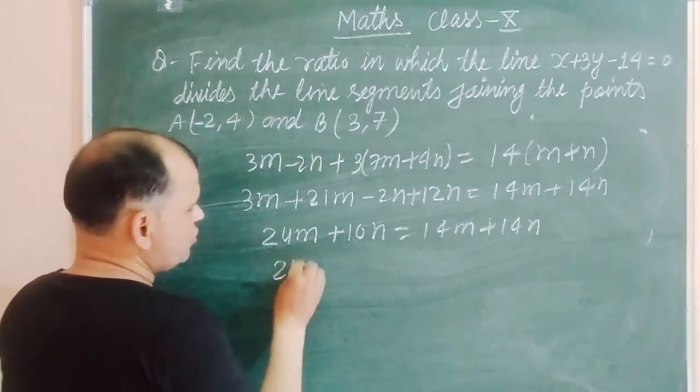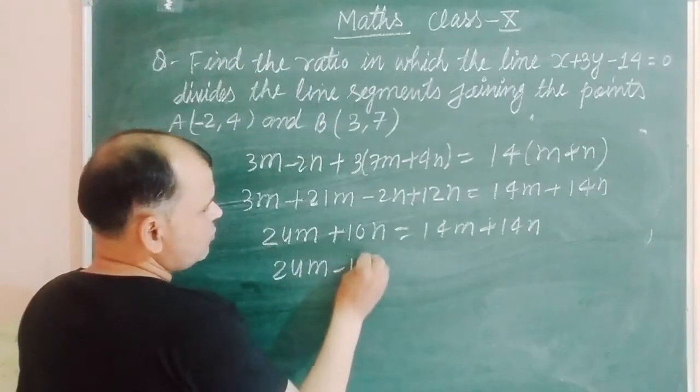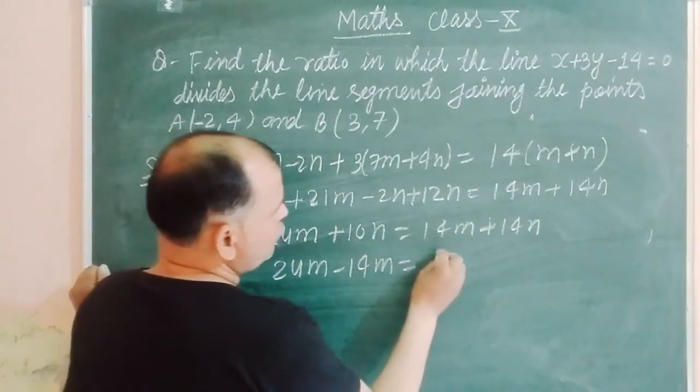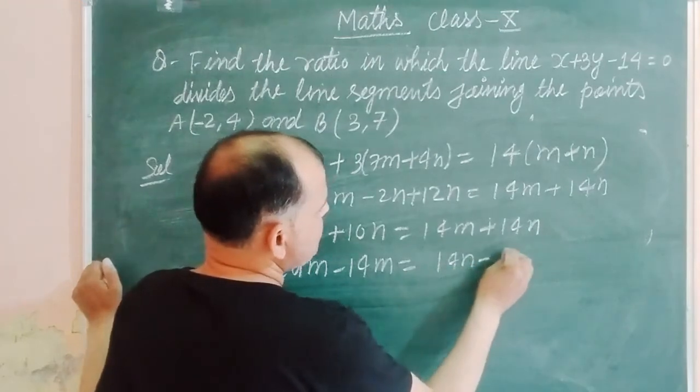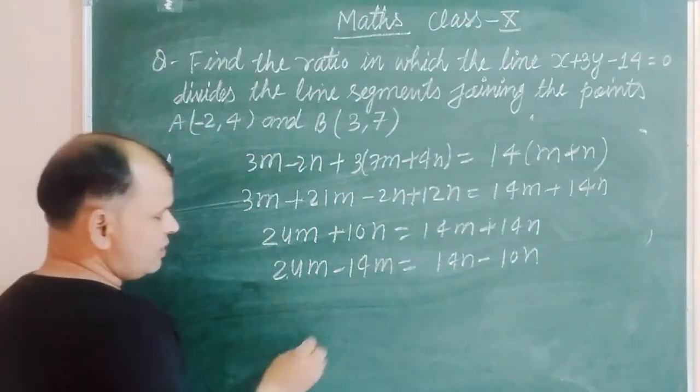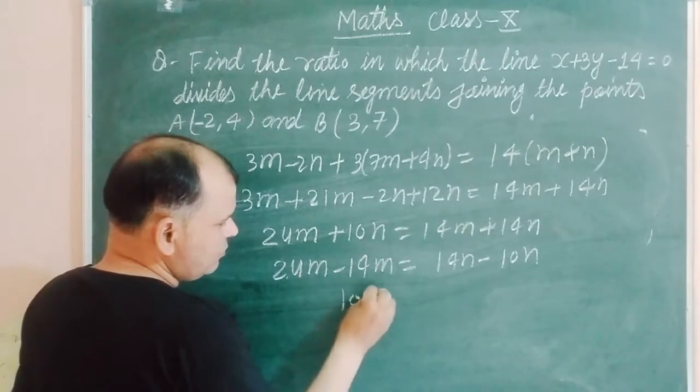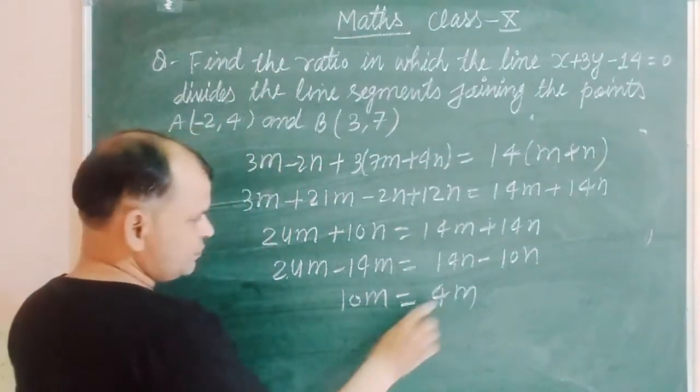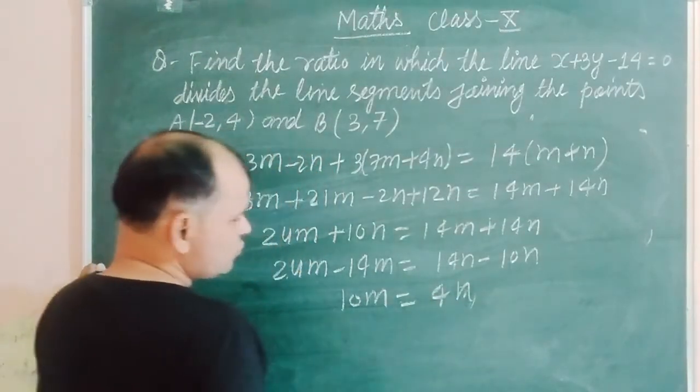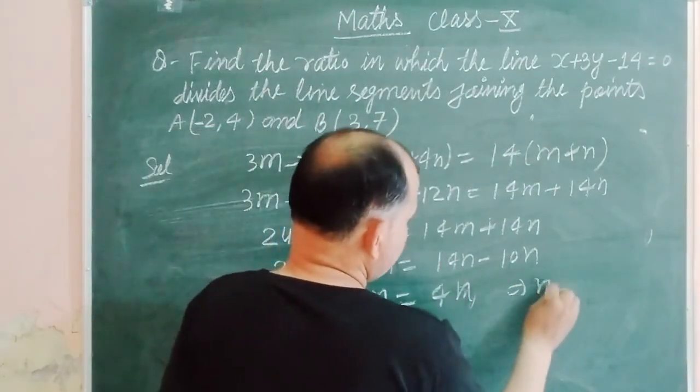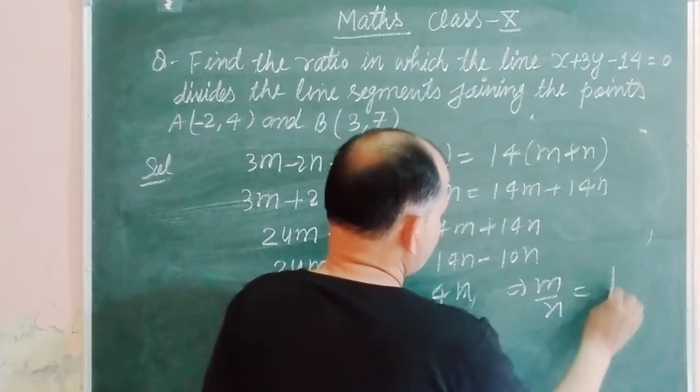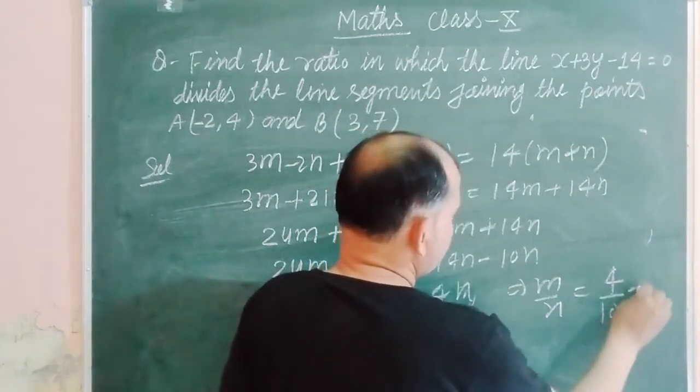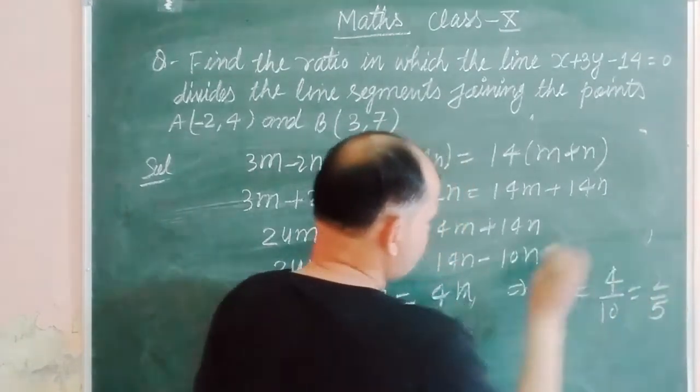So 24 minus 14 is 10m equals 4n. Now we divide by n, so we take m over n equal to 4 over 10, or 2 over 5.